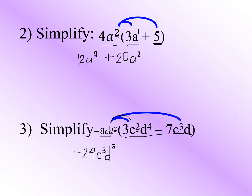Now proceed to the second term: negative 8cd² times negative 7c³d. Negative times negative gives us positive. 8 times 7 gives us 56. Copy variable c, add exponents: 1 plus 3 gives us 4. For variable d, add exponents: 2 plus 1 gives us 3. So our final answer is negative 24c³d⁶ plus 56c⁴d³.